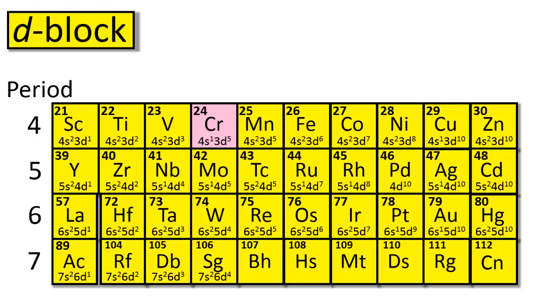Because of the special stability associated with half-full or completely full d-sub-levels, there are other transition metals that also have anomalous electron configurations. These include copper, niobium, molybdenum, ruthenium, rhodium, palladium, silver, platinum, and gold. Since these electron configurations are unexpected, they can only be confirmed experimentally through a technique called spectroscopy.